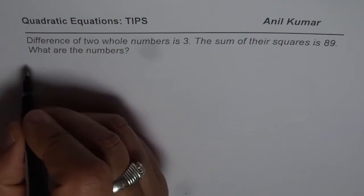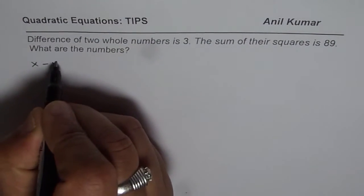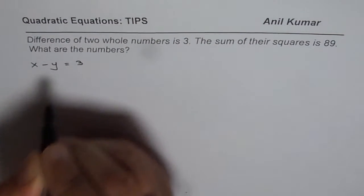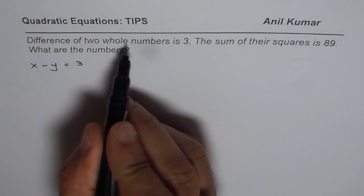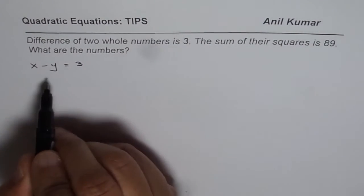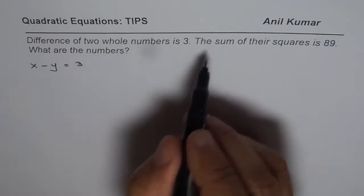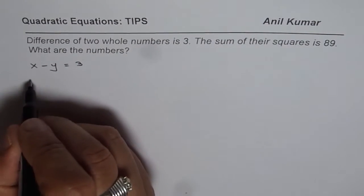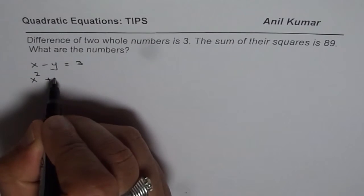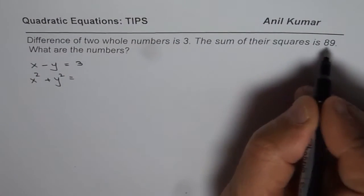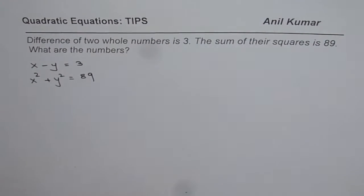So what we are given here is that x minus y equals 3, where I am using x and y as two whole numbers. Their difference is 3. The sum of their squares means x square plus y square is 89. That is given to us. We need to find the numbers.